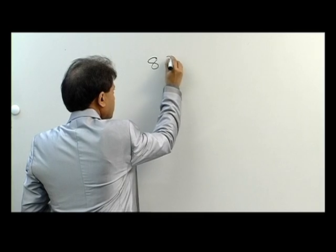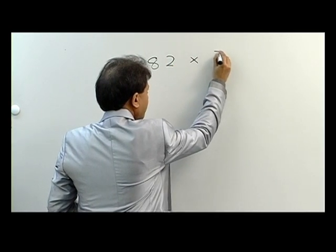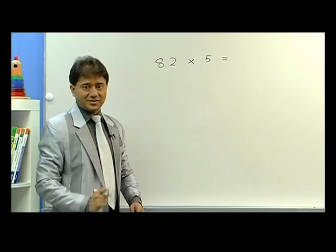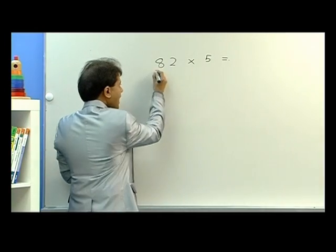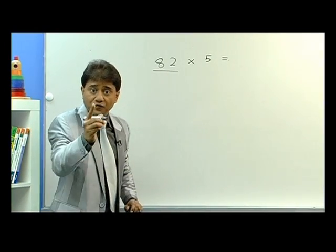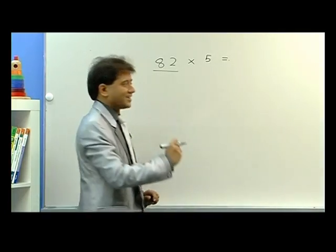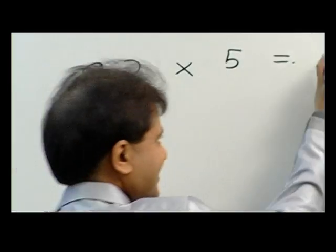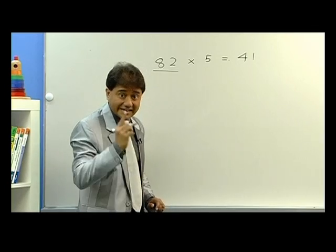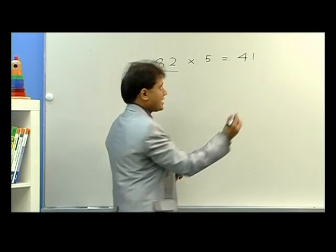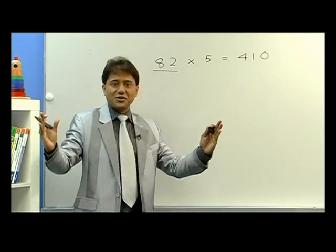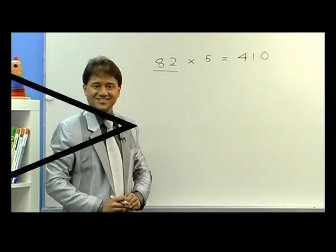82 multiplied by 5. The method is like this: we take half of 82. What is half of 82? 41. Correct. So I just write 41 and then I put a zero at the end. And believe it or not, this is the answer.